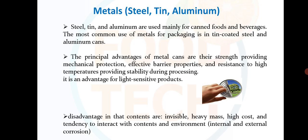Metals: steel, thin aluminium, and aluminium are used mainly for canned foods and beverages. The most common use of metals for packaging is in tin-coated steel and aluminium cans. The principal advantages of metal cans are their strength providing mechanical protection, effective barrier properties, and resistance to high temperatures providing stability during processing. It is also an advantage for light-sensitive products.